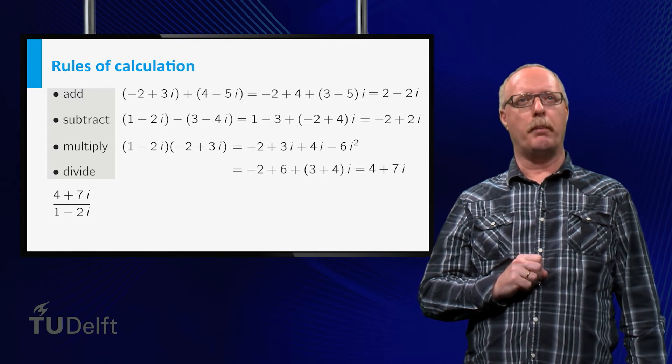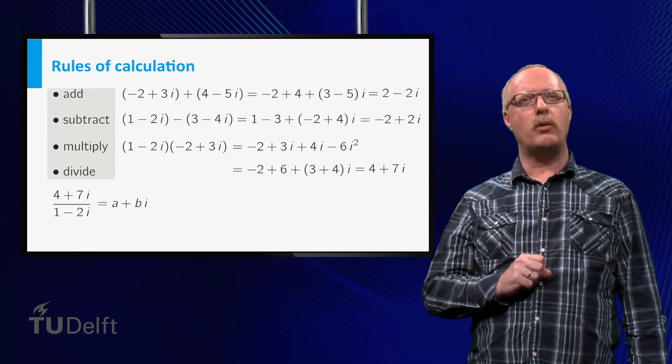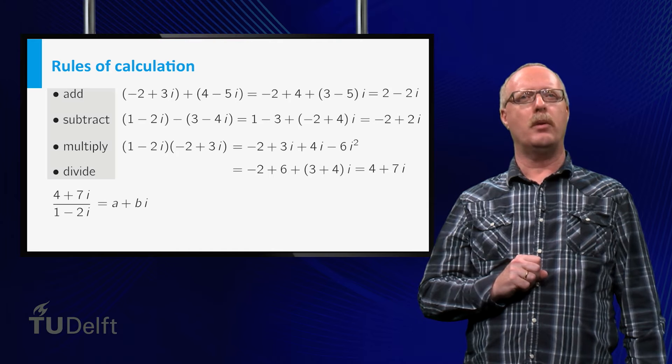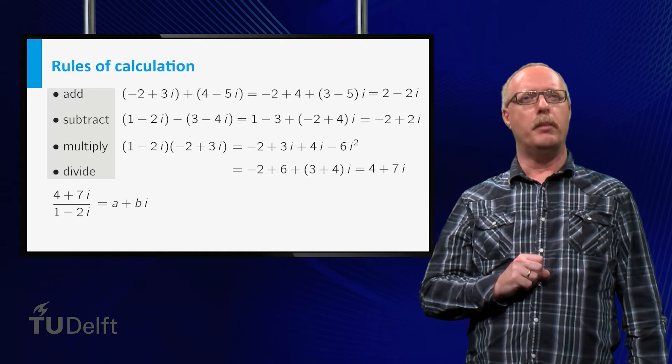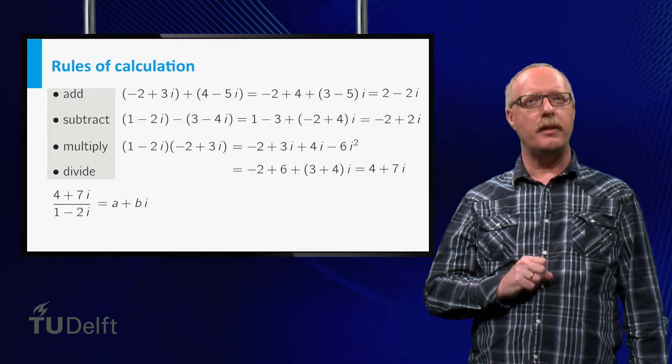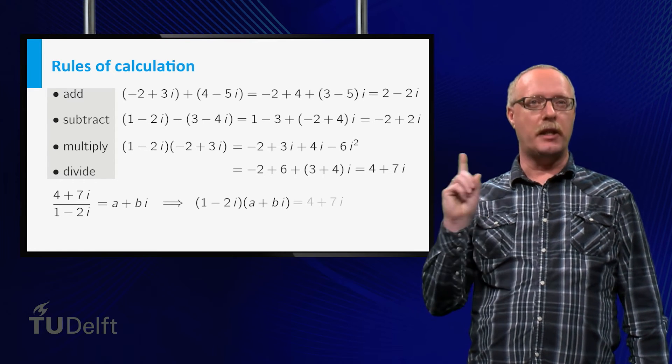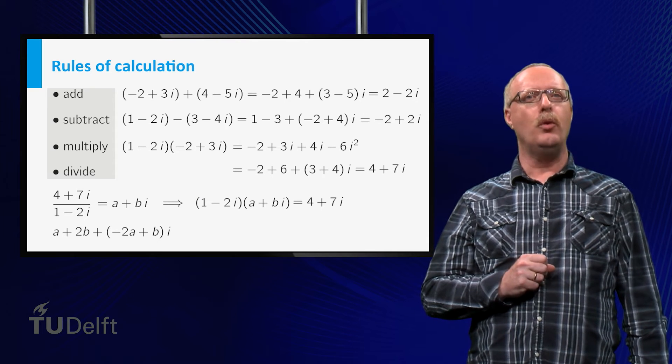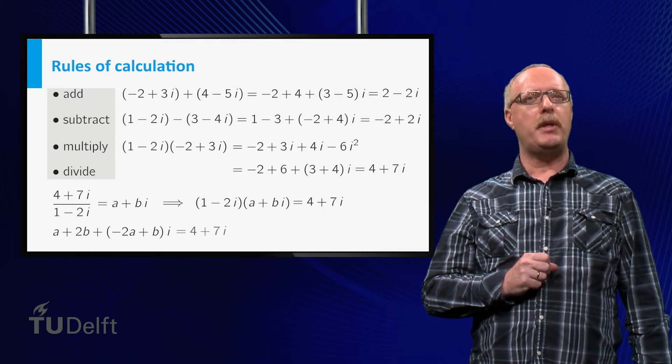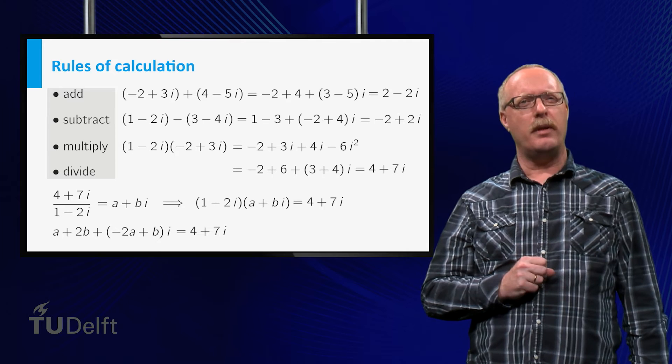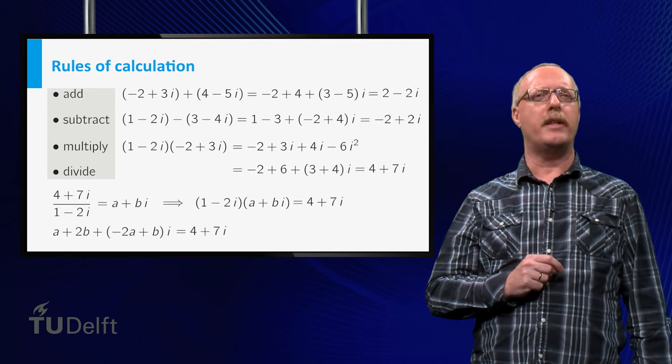If we want to divide two complex numbers, we expect to obtain another complex number with the property that if we multiply this by the denominator, we get a numerator. By expanding this product, this would lead to a system of two equations, which can be solved. However, there is a more elegant way to do this.